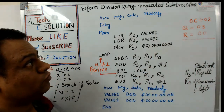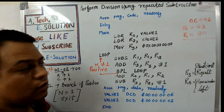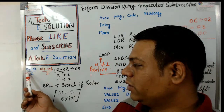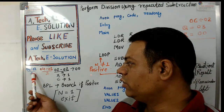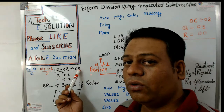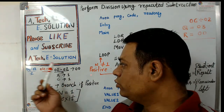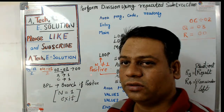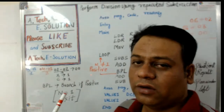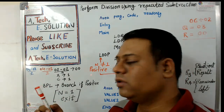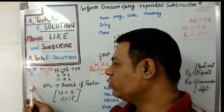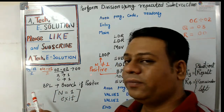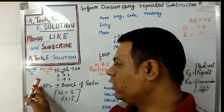This division is performed using repeated subtraction. The number 06 is subtracted by the second number 02 and the subtraction is repeated until we get a result equal to 0 or a negative number. To check this, we use a BPL instruction. BPL is branch if positive — if a number is greater than 0, the operation is performed. If the number is equal to 0 or negative, the branch is not executed and we exit the loop.